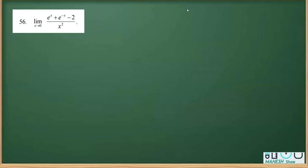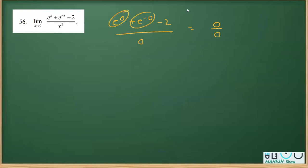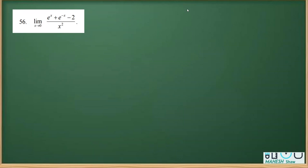By putting the value x = 0, we are getting this in the form of 0 by 0. Clearly, e raised to the power 0 is 1, plus e raised to the power minus 0 is also 1, giving 2 minus 2 = 0 in the numerator, and 0 in the denominator. So it is in the form of 0 by 0.